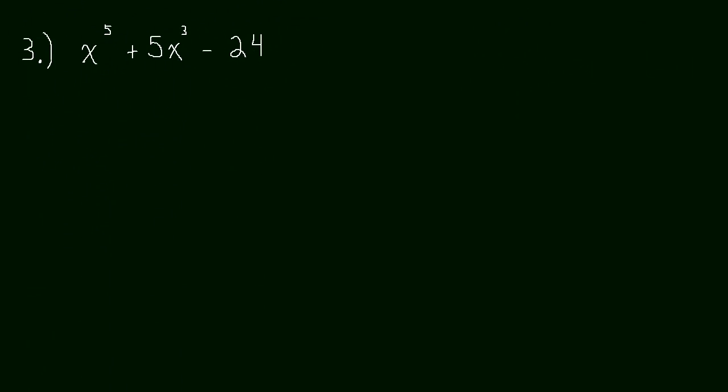Oh! I wrote this problem wrong. There we go. I just missed an x. How are we going to solve this problem? We haven't looked at a fifth degree polynomial yet. But hopefully you can realize that there's at least one x in every term. So let's pull an x out. So this will become x times (x⁴ + 5x² - 24).